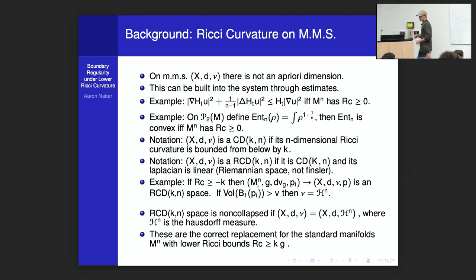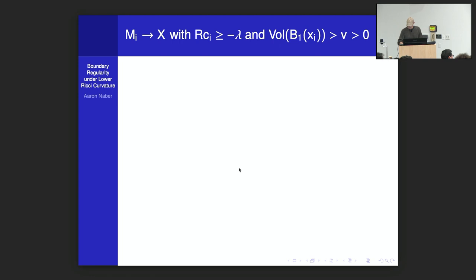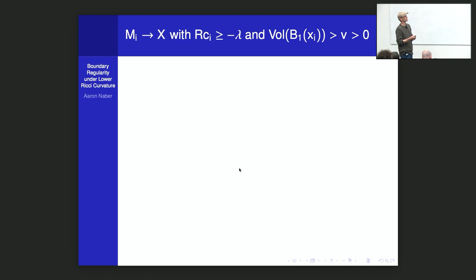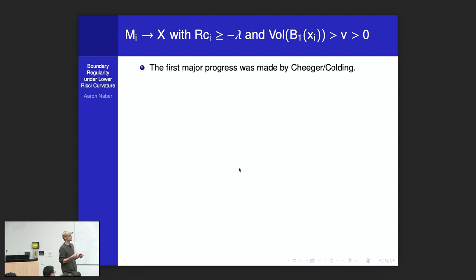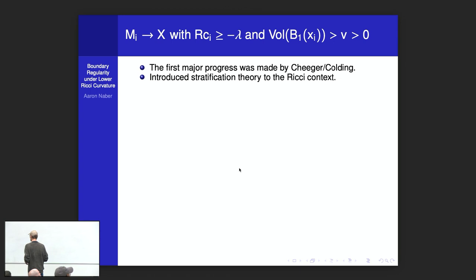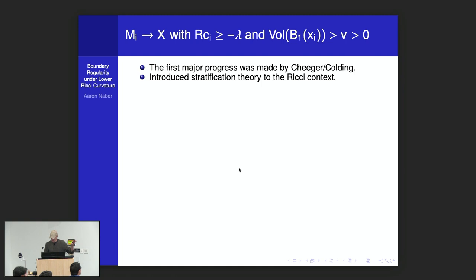So when I talk about a non-collapsed RCD space, it just means I've got a metric measure space with a lower Ricci bound and I'm using the Hausdorff measure on it — or just a smooth Riemannian manifold, whichever you prefer. Now I want to work toward the boundary case, recalling what's known about singular and regular sets for non-collapsed spaces with lower Ricci bounds. The first major progress was by Cheeger and Colding, who introduced the stratification into the Ricci curvature context.